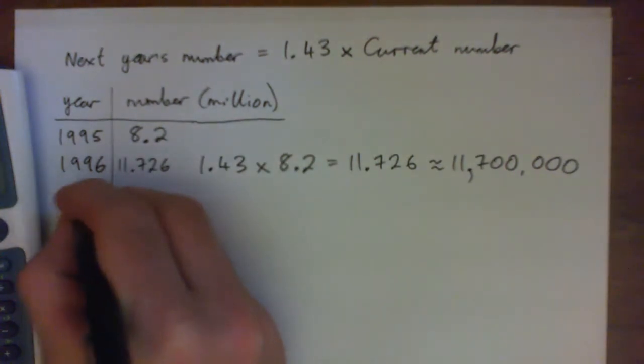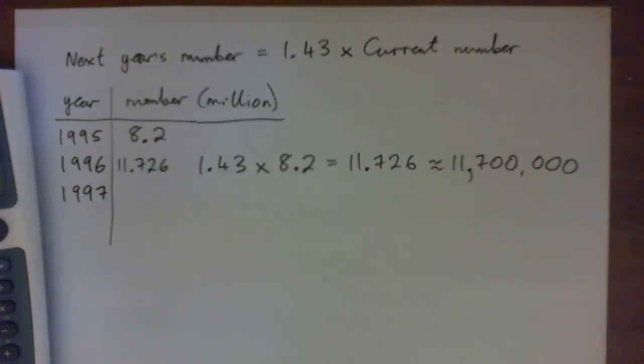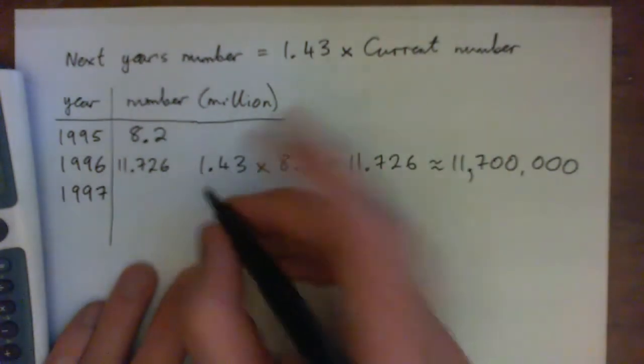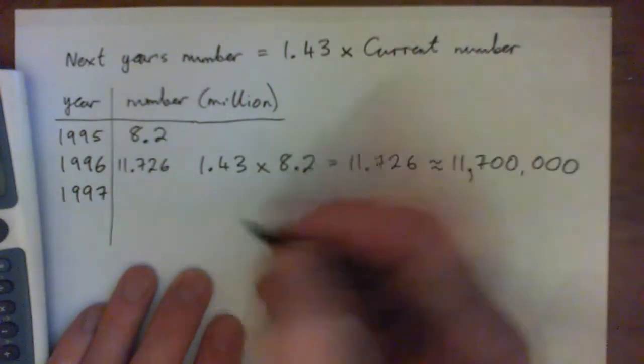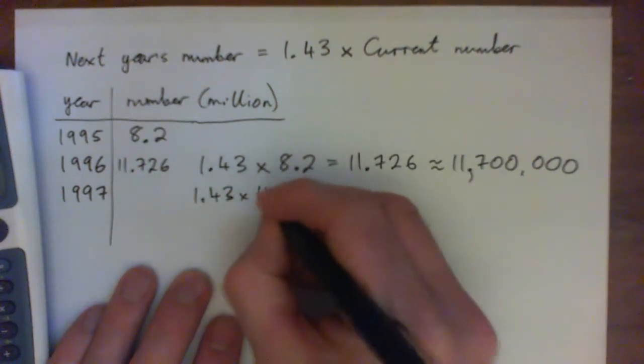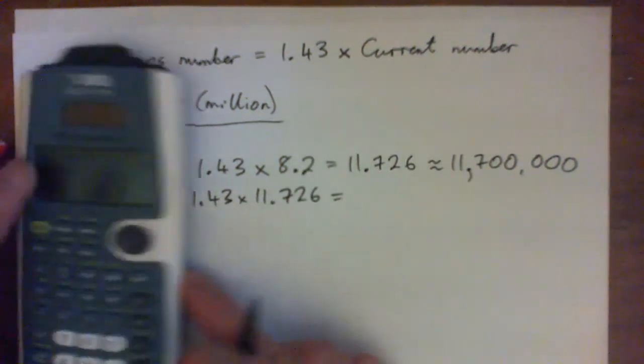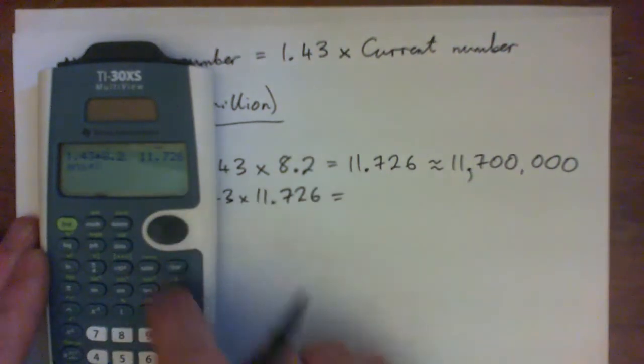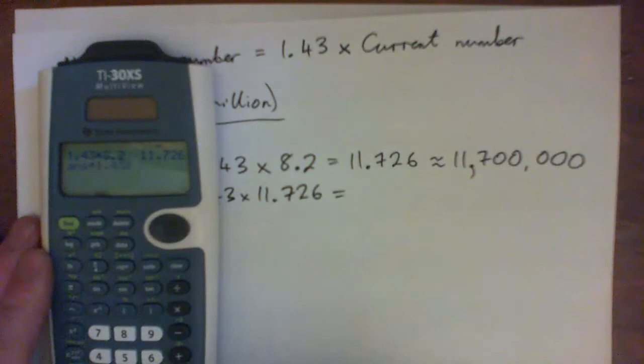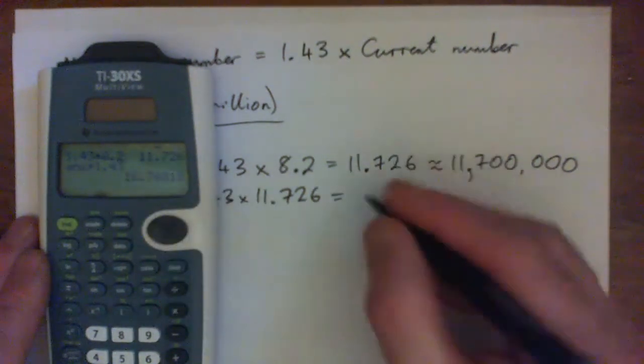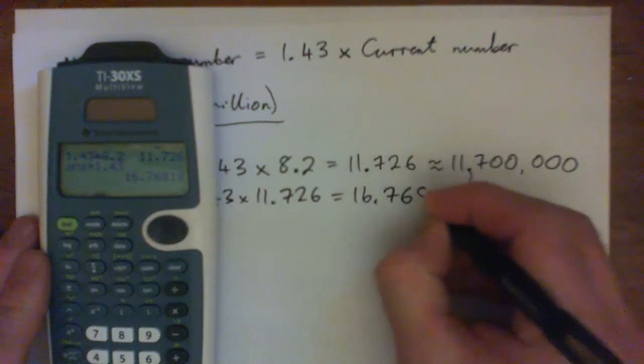Okay, so can you figure out what it would be for 1997? Press pause and figure out 1997. I know we're not answering the questions directly, but this table is helping us to answer questions 6, 7, and 8 in the book, the textbook questions, right? So press pause and do it. I'll do it with you now. So we go next year's number is 1.43 times the current number, so we could go 1.43 times 11.726.